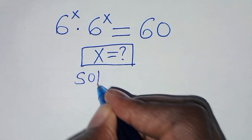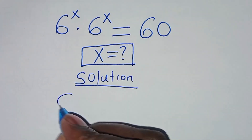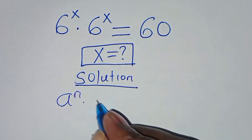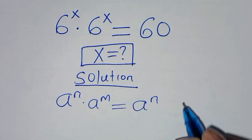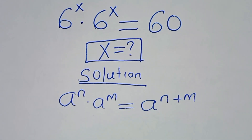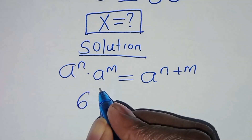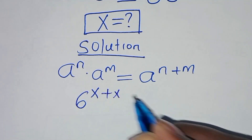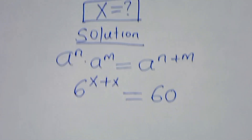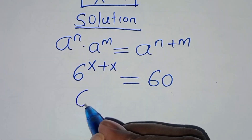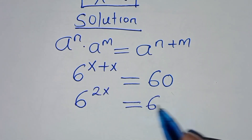Now let's present a solution here. This exponential equation is in the form of a to the power n times a to the power m, which you can express as a to the power n plus m. So applying this exponent property, we have 6 to the power x plus x, which is 2x, and this is equal to 60.